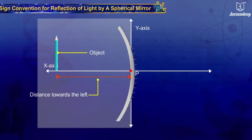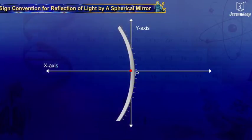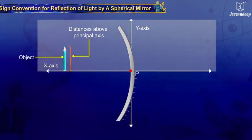Four, distances measured perpendicular to and above the principal axis are taken as positive.